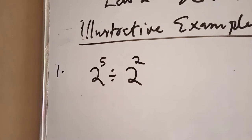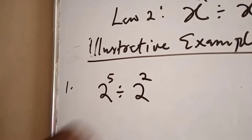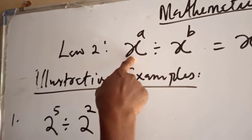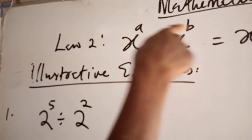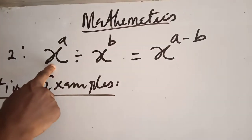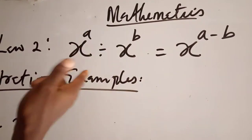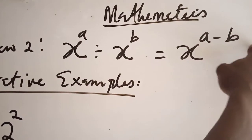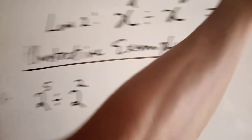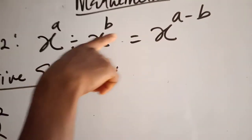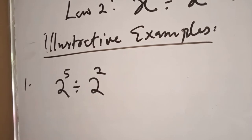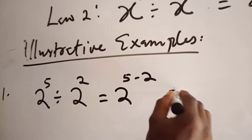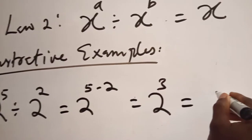Remember, as I explained in the last class, the First Law and the Second Law are almost the same. The terms in index form must have the same base but different or equal powers. The base here is x, and there is a division sign. All you need to do is take one of the x to represent all and then subtract the powers — that's a minus b. In the First Law we added the powers, but in this law we subtract them. So applying it here: 2 raised to the power of 5 divided by 2 raised to the power of 2 gives you 2 raised to the power of 5 minus 2, which equals 2 raised to the power of 3, which is equal to 8.